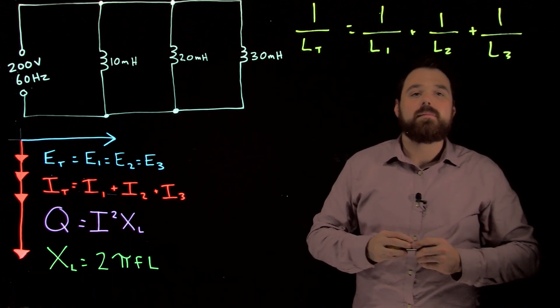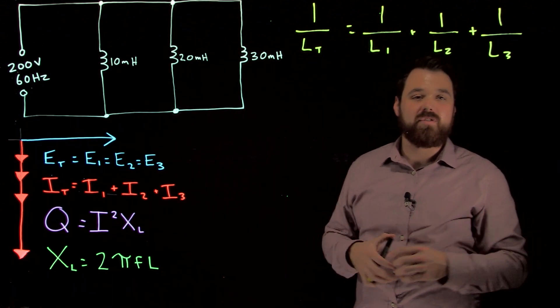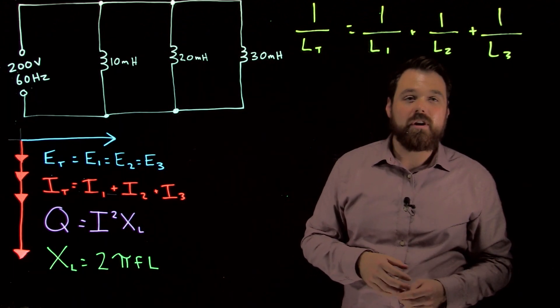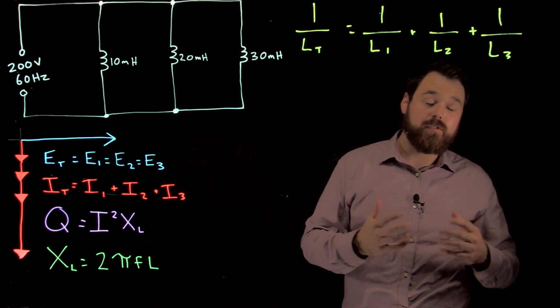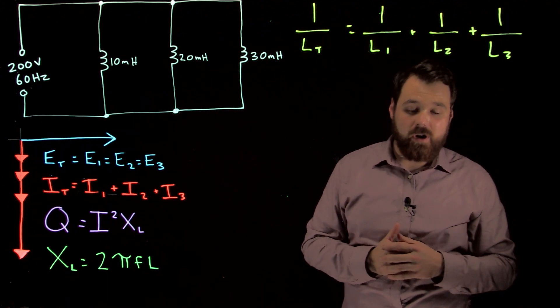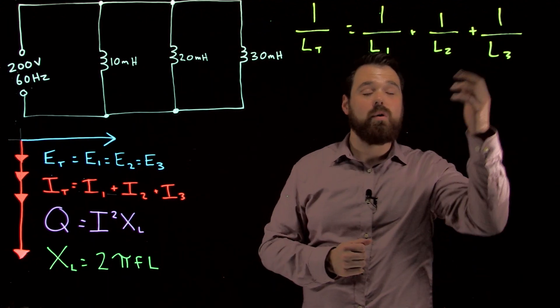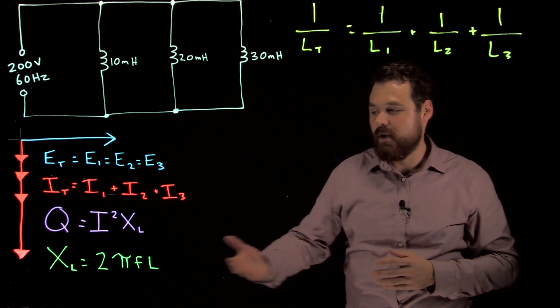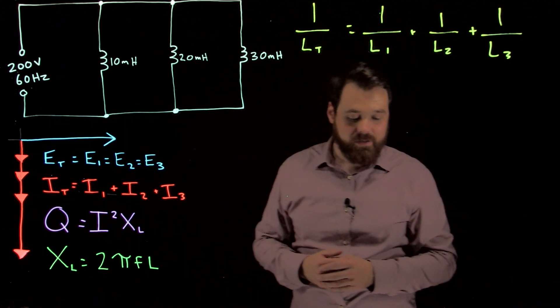Once we do that, we want to be looking for our total inductive reactance for the circuit. There's a few different ways we can go about doing that. Two of the main ones are we can simply take our total inductance, which we calculated before, and put it into our inductive reactance formula.